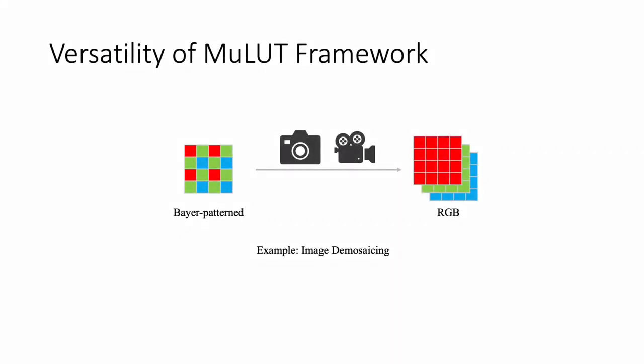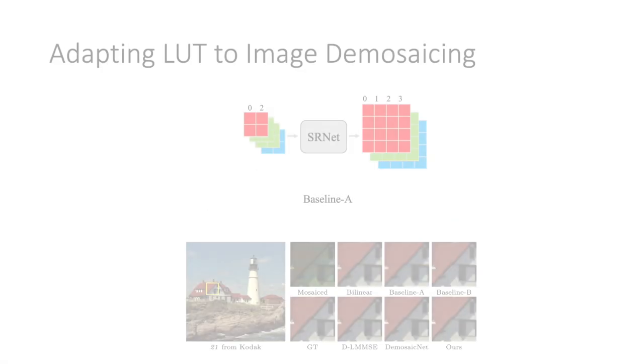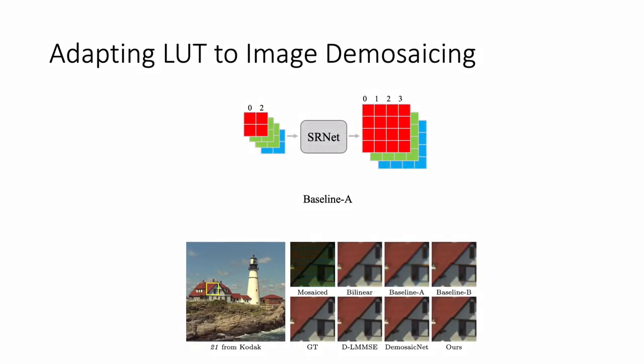MuLUT enables the flexible design of the processing pipeline for low-level vision tasks. Here, we take demosaicing Bayer-patterned images as an example. A straightforward way to apply SR LUT is to treat the pixels in the Bayer pattern as four separate channels. This way suffers from sub-pixel shift, resulting in blurry results.